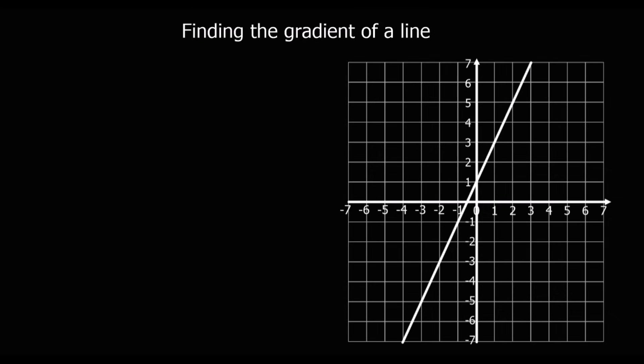In this video, we're going to look at finding the gradient of a line. A gradient of a line is how steep the line is. We can define it as: for every 1 the line goes across the x, how far up or down do we go? So if we look at this graph, for every 1 we go across, we're going up 2. So the gradient of this line is 2.